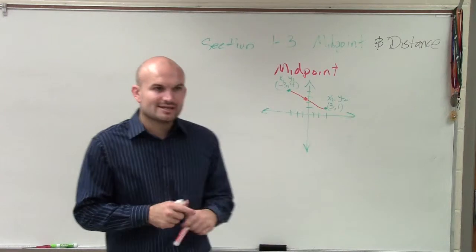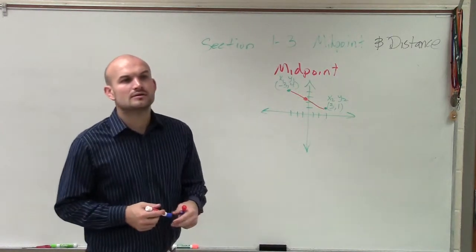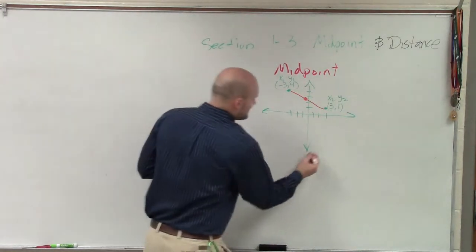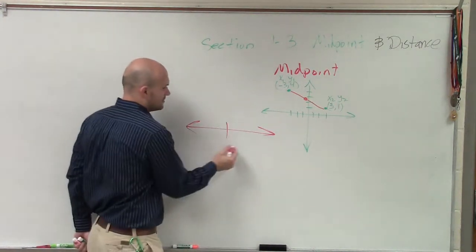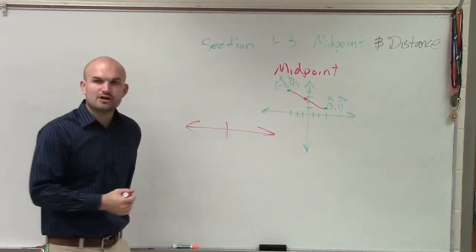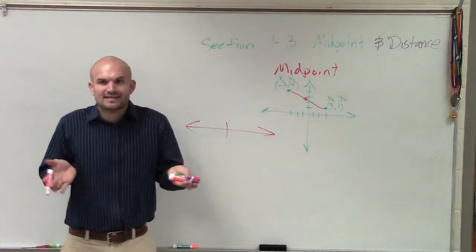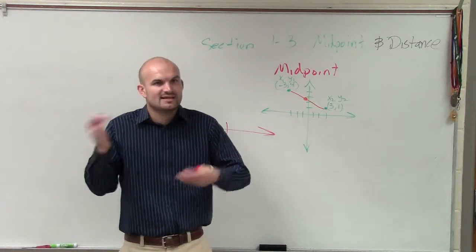So, previously, we determined that when we have a line, to determine the midpoint, we just added the distance, we added our two points and then divided by two.